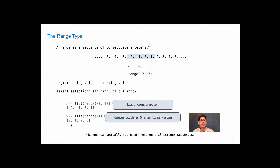One special feature of ranges is that if you leave out one of the numbers — so you only specify one number — that's treated as the ending value, with an implicit starting value of 0. So listing range(4) is 0, 1, 2, 3 — including 0 but excluding 4.